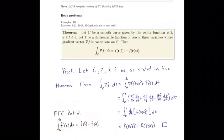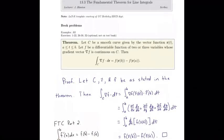Let's see a similar result for line integrals. We'll let c be a smooth curve given by the vector function r of t, where t ranges from a to b, and we let f be a differentiable function of two or three variables whose gradient vector is continuous on the curve c. Then the line integral of the gradient of f equals f of r(b) minus f of r(a).